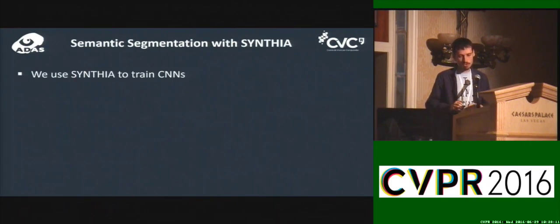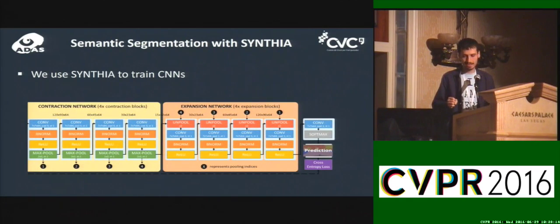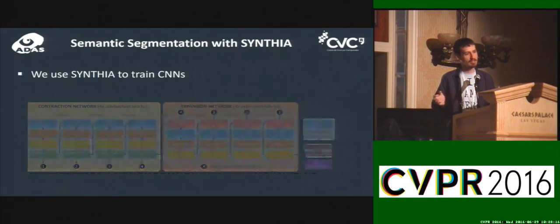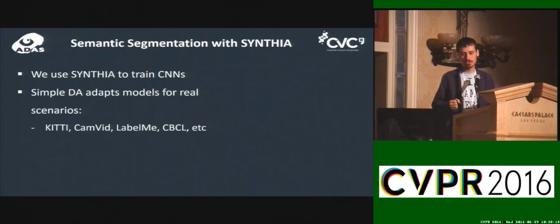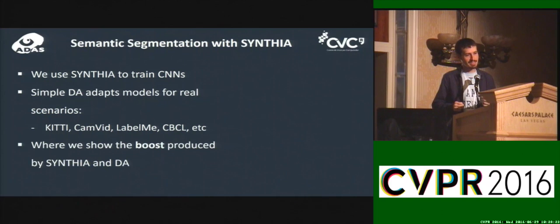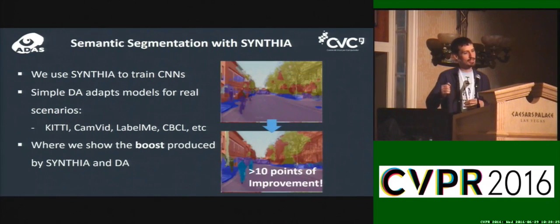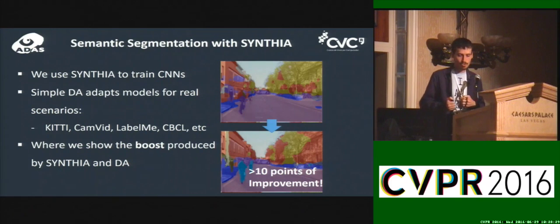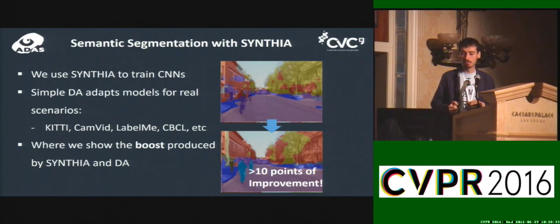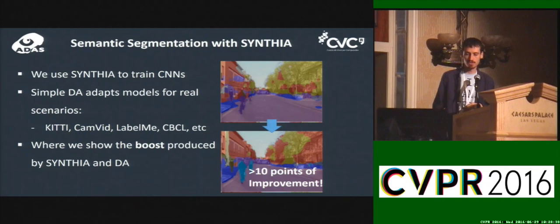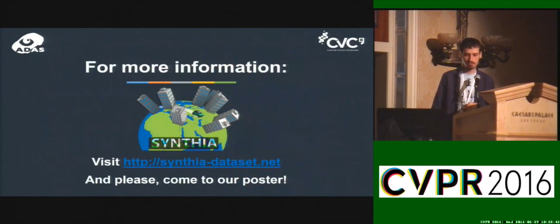We have trained a convolutional neural network to produce models that we can later transfer to real environments using domain adaptation techniques. From our experiments, the take-home message is that the current gap between virtual environments and reality is quite small for semantic segmentation. And actually, if you use simple domain adaptation techniques, you can get a really nice boost in accuracy in terms of the final result when testing in real domains. For example, checking the comparison between before and after using domain adaptation, you get about 10% increase.